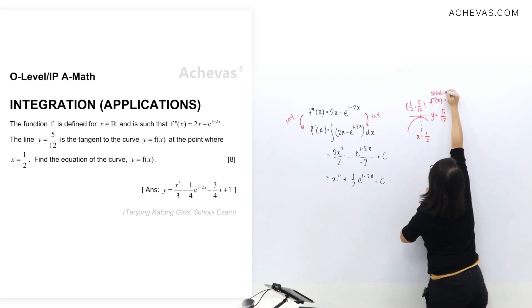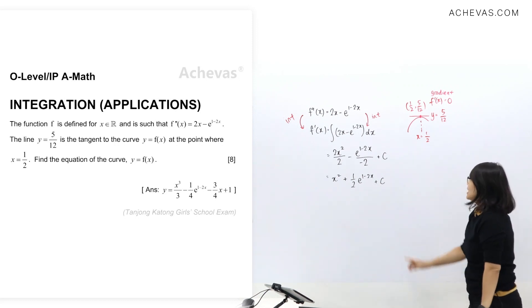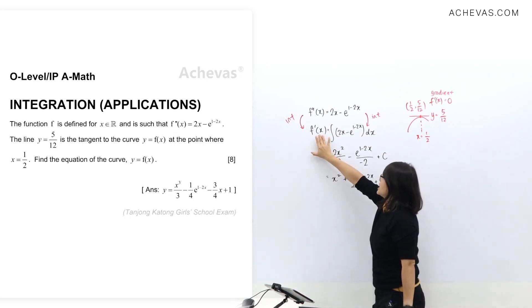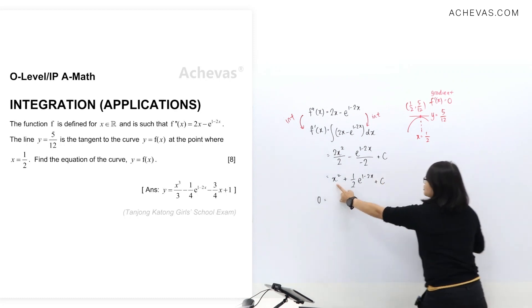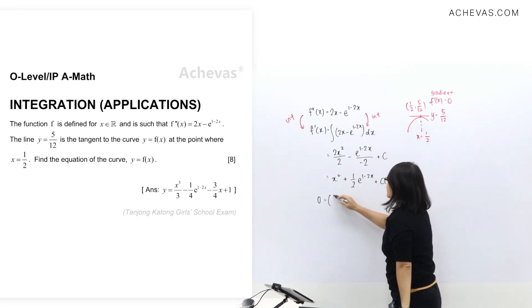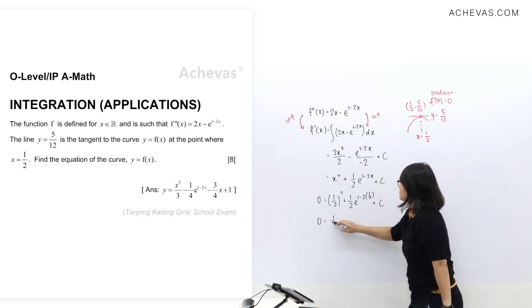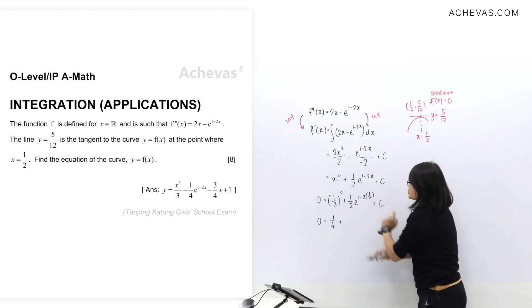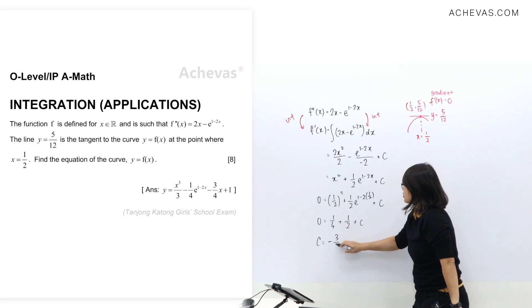Next we need to find c. I need to substitute the gradient f'(x) as 0 and I can substitute the x value as half. Let's simplify: we have 0 = 1/4 plus this one will be e^0, so I get half here. Moving these two over there, so I have c value as -3/4.